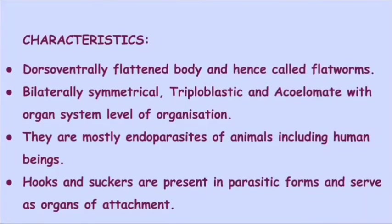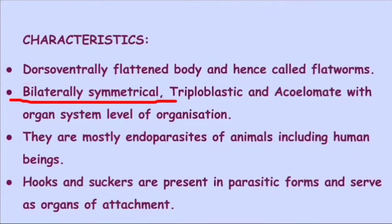The characteristics of Platyhelminthes include a dorsoventrally flattened body — both the dorsal side and ventral side are flattened, hence called flatworms. Next is bilaterally symmetrical: the body of an organism can be divided into similar parts by only one plane, and that is termed bilaterally symmetrical.